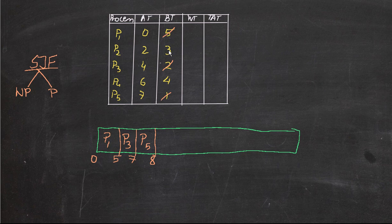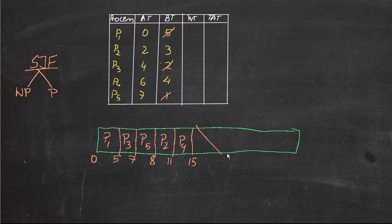P5 is done. Now the shortest job among the remaining P2 and P4 is P2, so we execute P2 first: 8 plus 3 is 11. Then we execute P4 from 11 to 16 (11 plus 5 is 16). So we have the Gantt chart sequence for the non-preemptive shortest job first algorithm: P1 → P3 → P5 → P2 → P4.